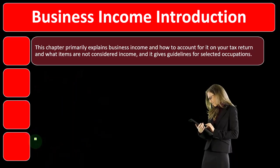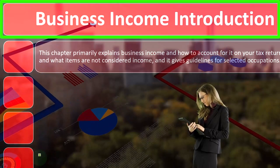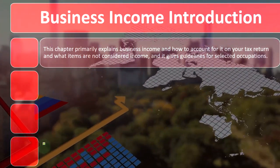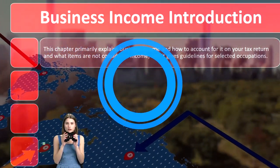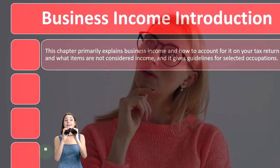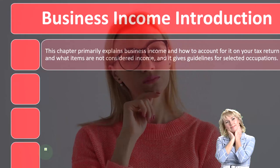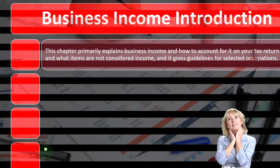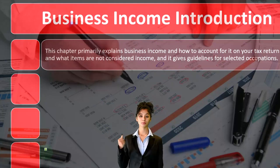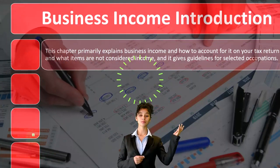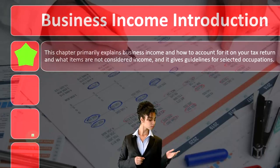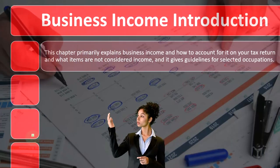Let's focus on the income side of things. We're looking at business income. The general rule from the IRS's perspective is that anything you receive is basically income unless the IRS has an exception saying it's not income. So when thinking about business income, the questions are: one, is this income? Two, is it exempt from having to be reported as income? And if it is income, where do I report it — on Schedule C or possibly somewhere else on Form 1040 or another form or schedule? This chapter primarily explains business income, how to account for it on your tax return, and what items are not considered income — that's just as important to know.